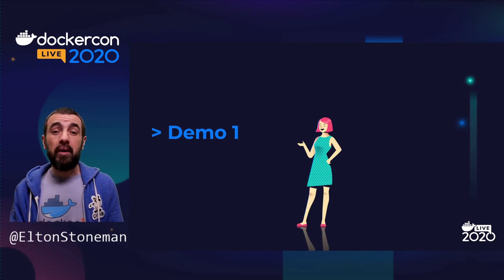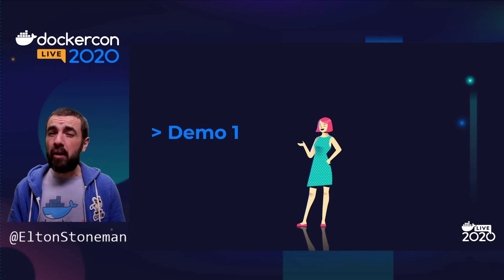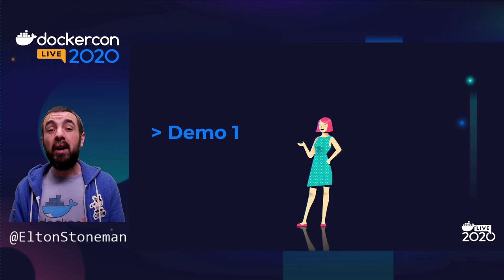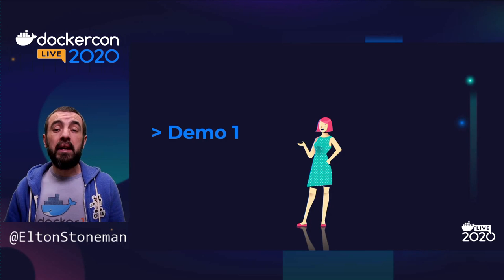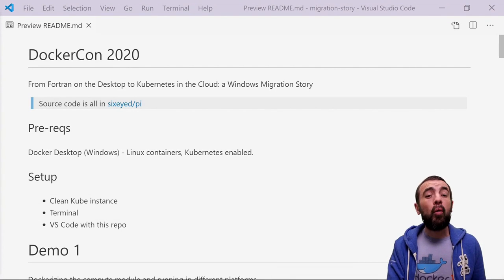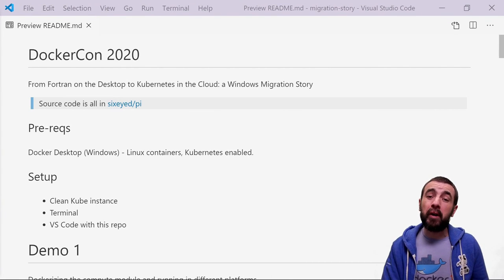The ultimate goal is to have an alternative to the desktop UI — a website that works in exactly the same way and uses the same compute module. I've got a bunch of demos to show you, but instead of doing hardcore computational fluid dynamics, my demo app is just computing Pi. Although it's a much simpler application, it has some of the same concerns, and I'll be following the same process we took with the real application. All the demos are up on GitHub, and at the end of the session I've got a page of links.